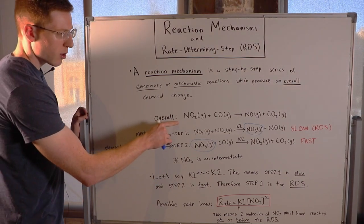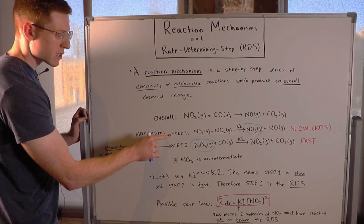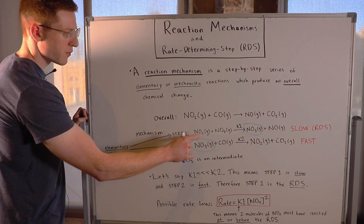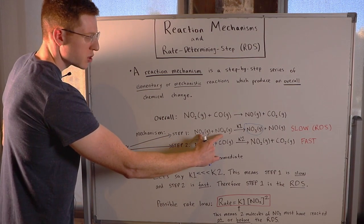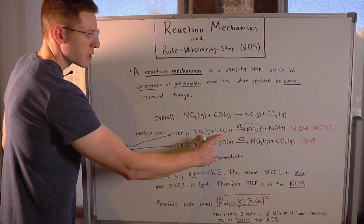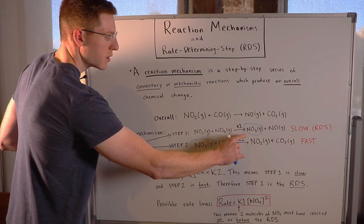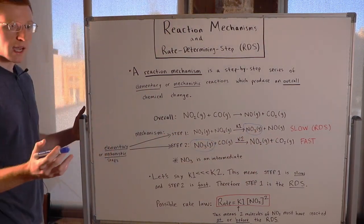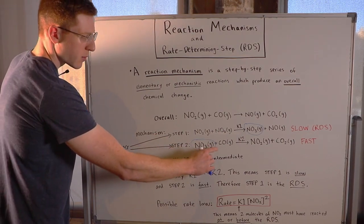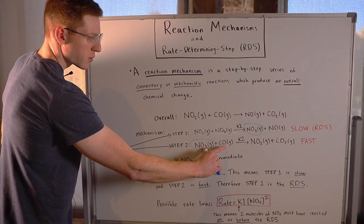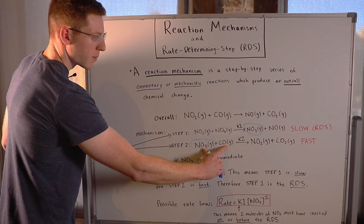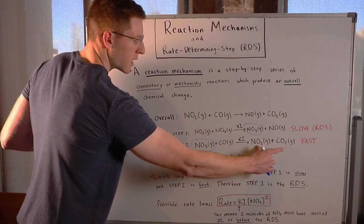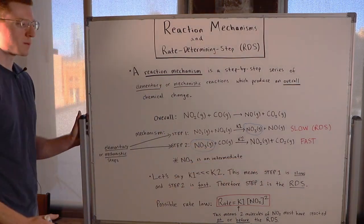This overall chemical reaction actually takes place in two steps. In the first step, two molecules of NO₂ gas react with rate constant K₁ to produce a molecule of NO₃ gas and a molecule of NO gas. In the second step, a molecule of NO₃ gas combines with a molecule of carbon monoxide gas with rate constant K₂ to produce NO₂ gas and CO₂ gas.